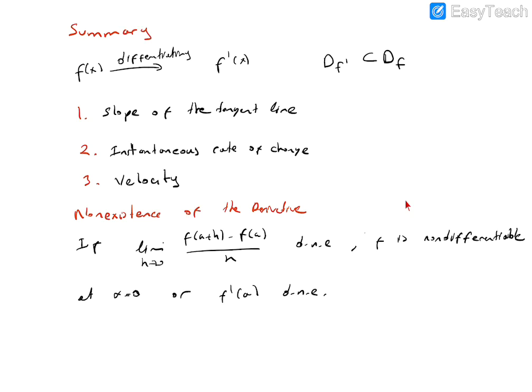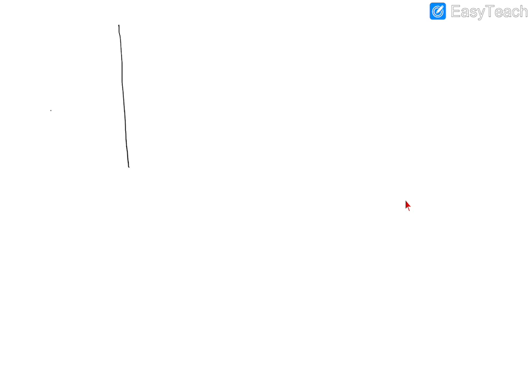When this limit does not exist, we can show some geometrical aspects. For example, if your function is not continuous and is jumping at some points, like this, and here it continues like this, then in this case there is no tangent line. It is not continuous, so it is not differentiable.